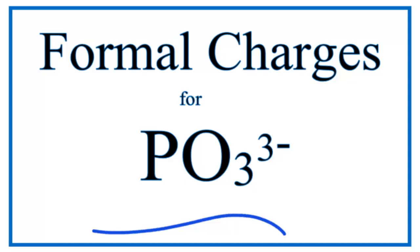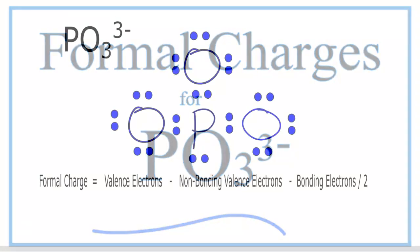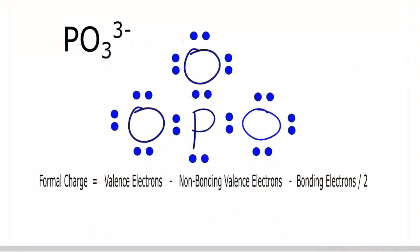To calculate the formal charges for PO3 3-minus, the phosphite ion, let's first look at the Lewis structure. We have a Lewis structure here that we think is correct and the best or most likely Lewis structure for the PO3 3-minus ion. So let's do the formal charges.